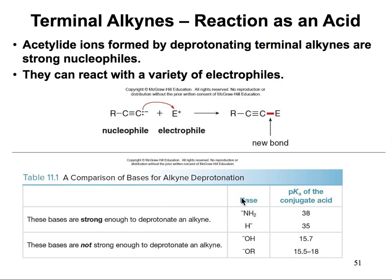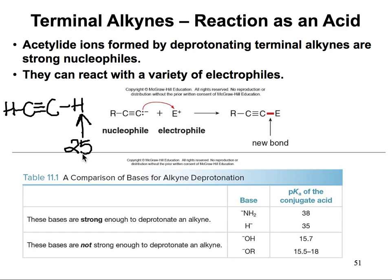It's important to recognize which bases are good enough to deprotonate the initial terminal alkyne. A base needs to be strong enough. The terminal triple bond has a pKa of 25, so we need a base whose conjugate acid has a higher pKa than 25. For example, NH2- or H- have really high pKa values and will work.